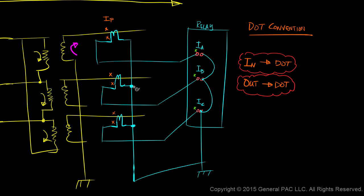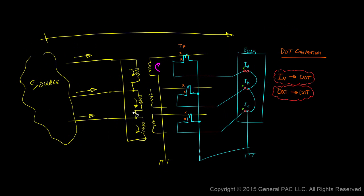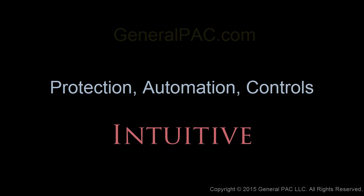In Part 2, we talked about current transformers and the polarity markings of current transformers. We talked about different arrangements of these polarity marks and how to interpret them. As a teaser, we drew the Y-connected three-phase current transformers. In Part 3, we'll talk about current transformer ratio and how to relate primary current with secondary current. This module was brought to you by GeneralPac.com — making power system protection, automation, and controls intuitive.